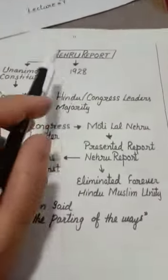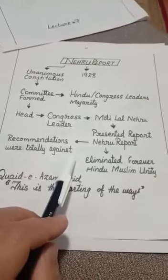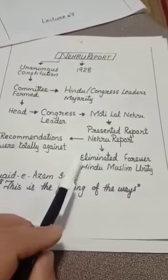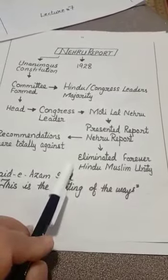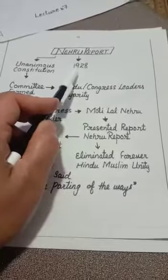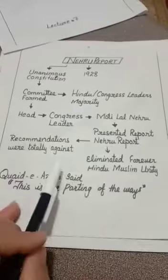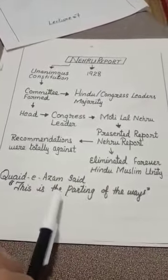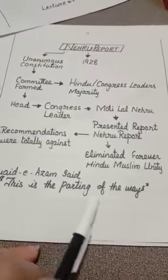This report, being completely against the Muslims, changed the thinking from Hindu-Muslim unity toward the idea of a separate country. This was an important juncture — an important turn. Here, Quaid-e-Azam said, 'This is the parting of the ways,' meaning from here our paths are separate. This shift came after the Nehru Report of 1928.